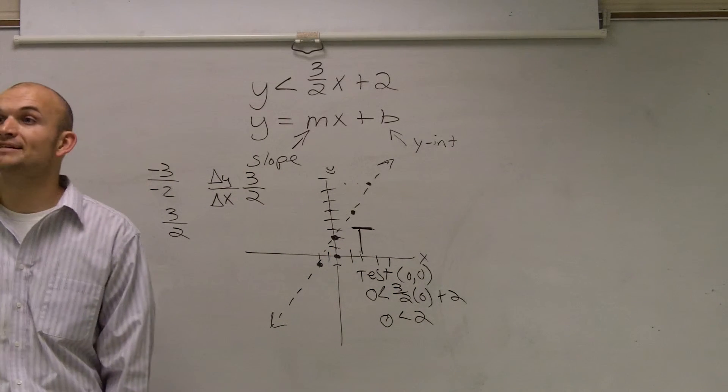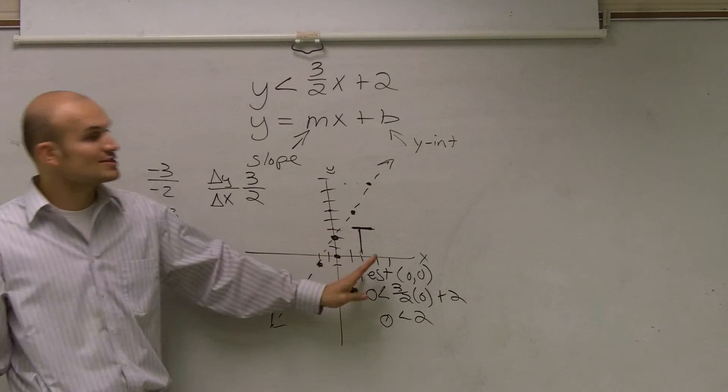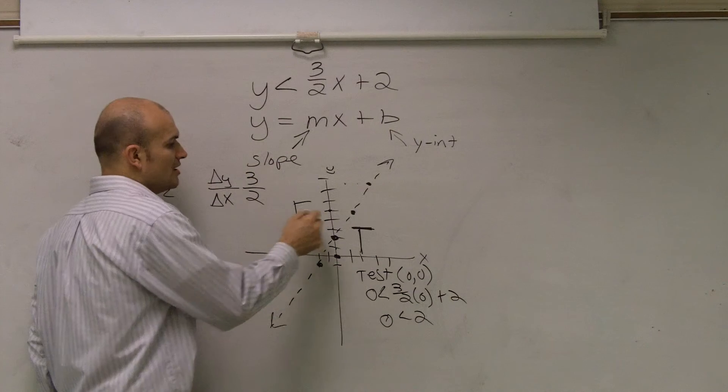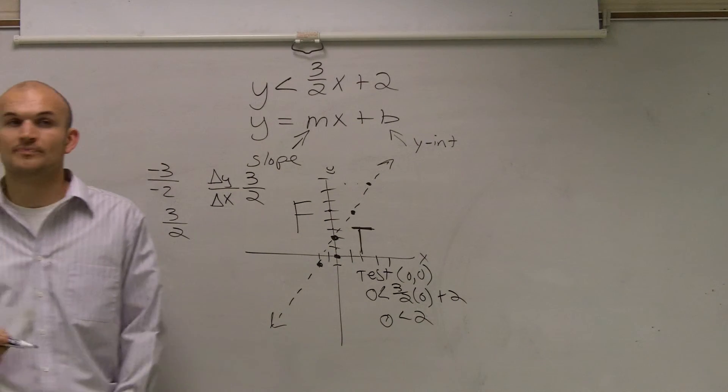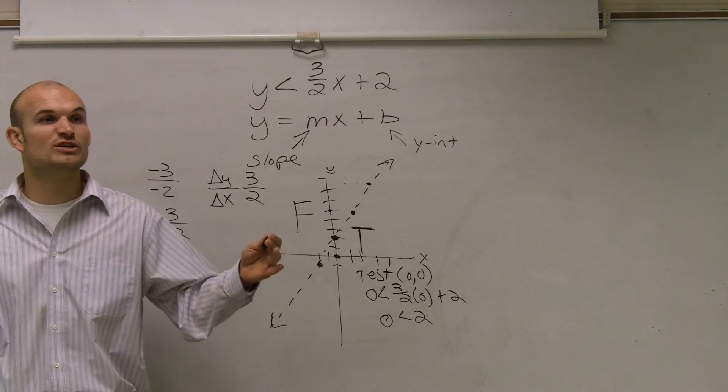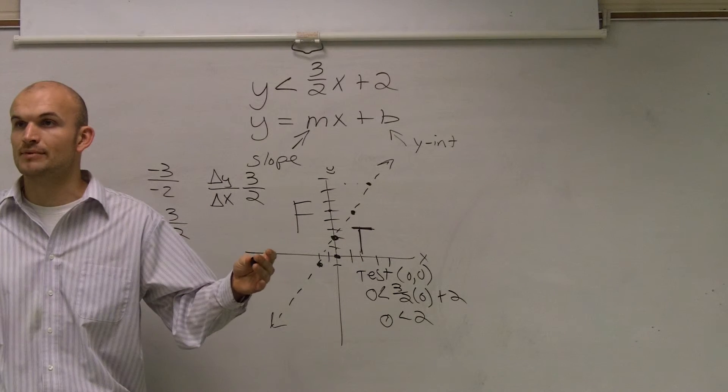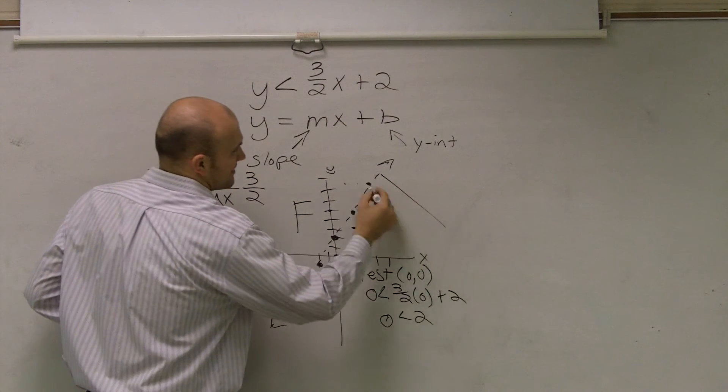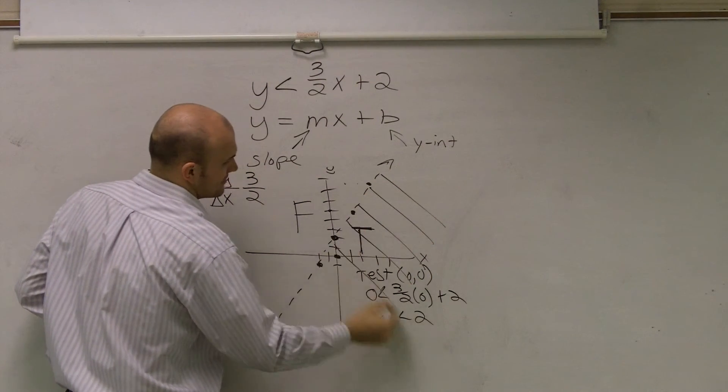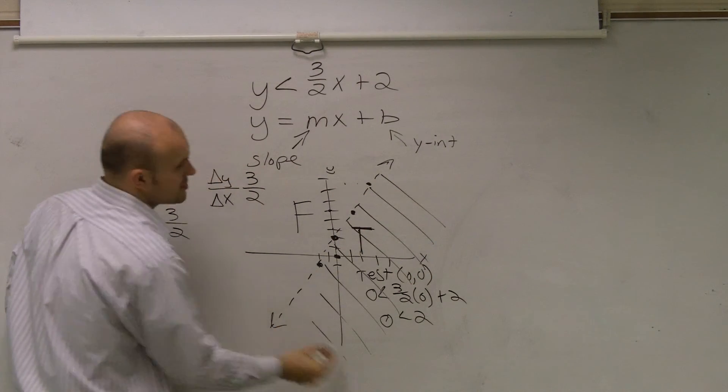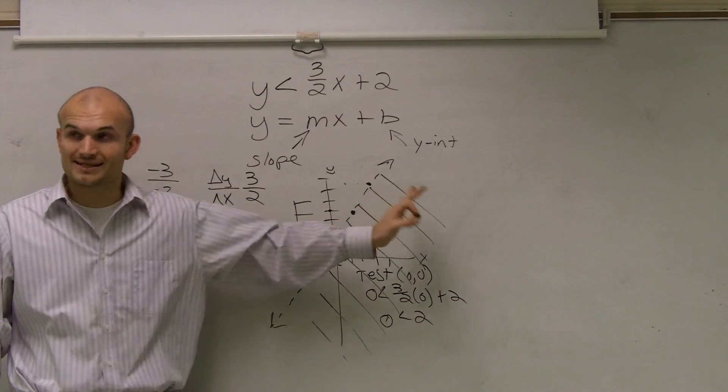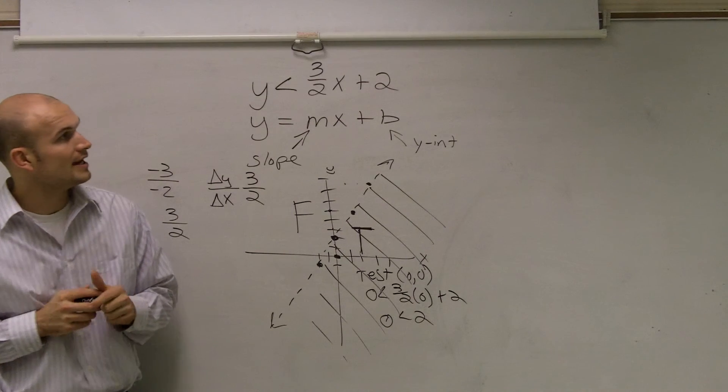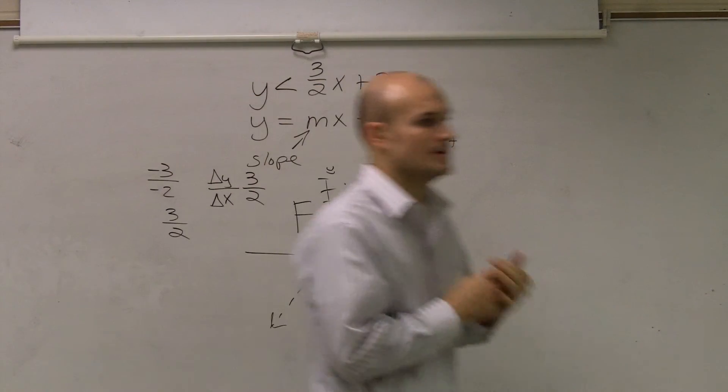So make a nice big T. And the reason why I want you to make a nice big T is because you guys need to understand that all the points below my line are true. Therefore, all the points above my line are false. Now remember when we did a number line, where do we shade towards? The true statement. So what that means is all points below my line are going to make my inequality true. And that's it for 7a. Thank you.